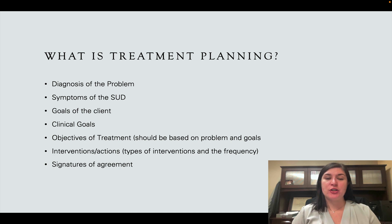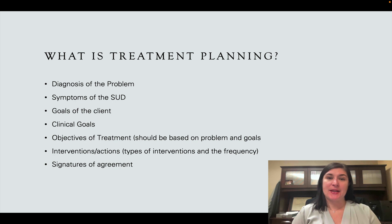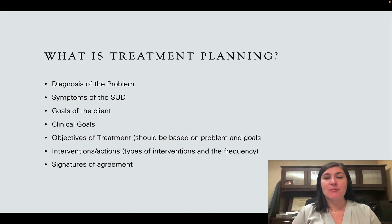There are also objectives of treatment, which should be based off of the problems the client is having and the goals both the client and clinical team have. Then there are the interventions — how you're going to complete those objectives, such as attending 12-step groups or participating in couples and family therapy — along with the frequency, such as attending group five days a week, couples therapy once a week, or 90 meetings in 90 days.